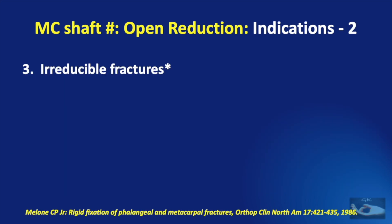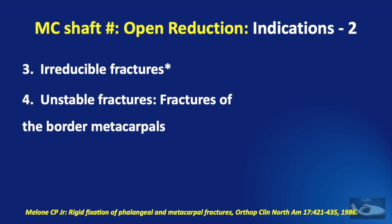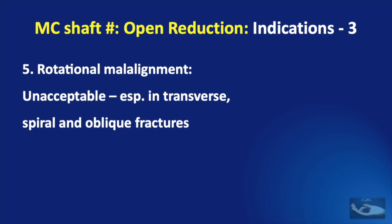If an attempt has been made to do a closed reduction of a metacarpal shaft fracture but it proves irreducible, it is an indication for open reduction. Similarly, unstable fractures — i.e., fractures of the border or marginal metacarpals — are indications for open reduction. Even the slightest amount of rotational malalignment is an indication for open reduction, especially in transverse, spiral, and oblique fractures.